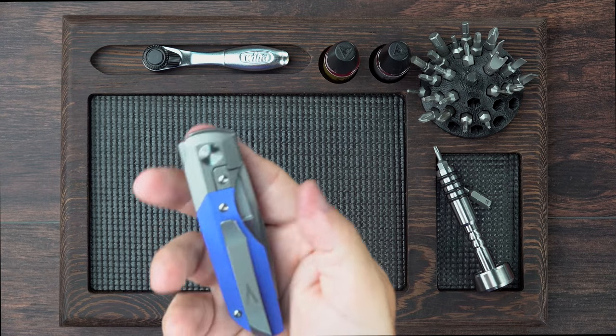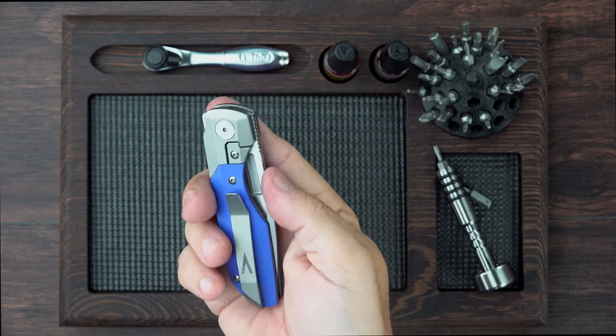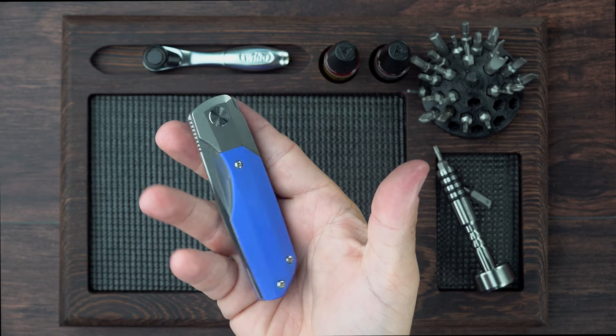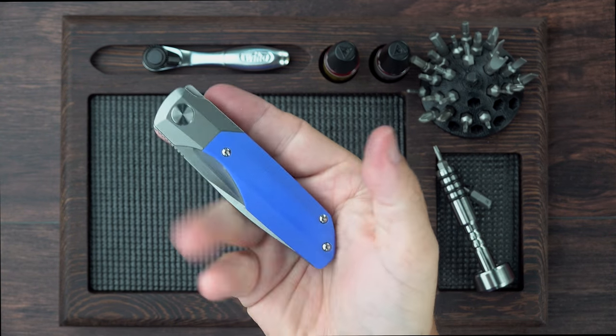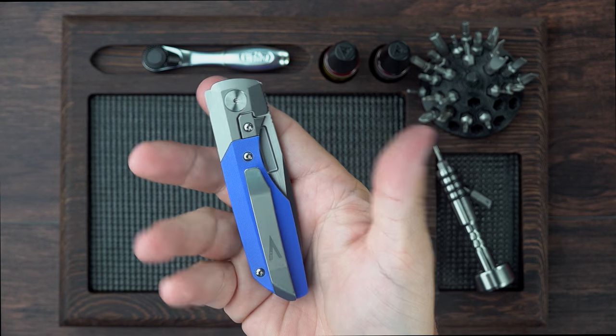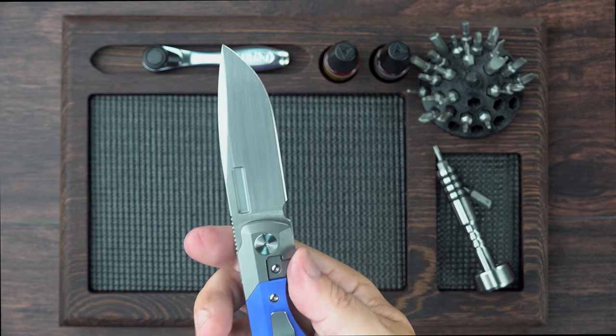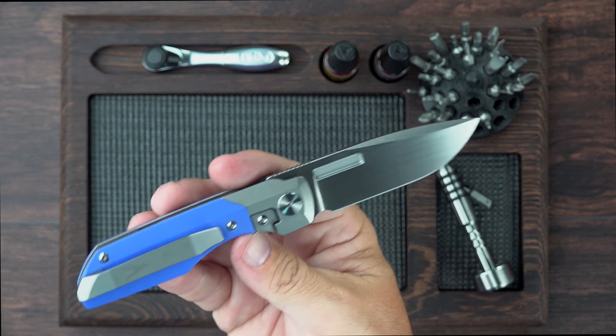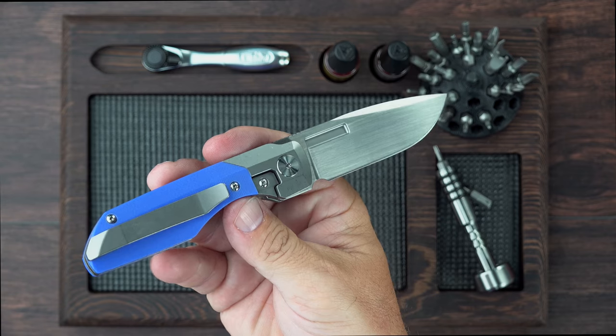But again, here's what the knife looks like with these blue scales. They're almost a periwinkle in color, I think. But they do look nice. And it's just a gorgeous knife.